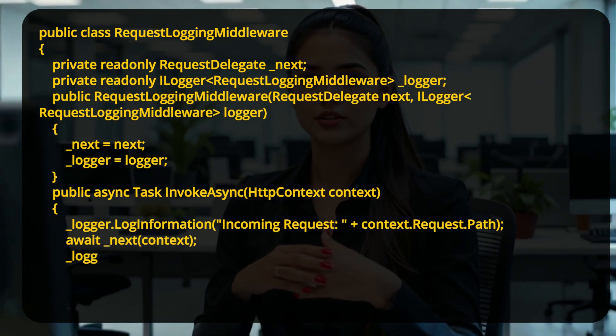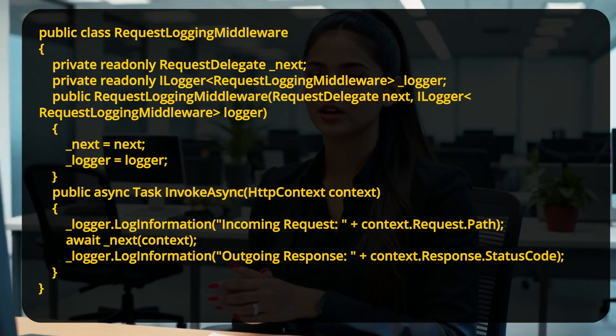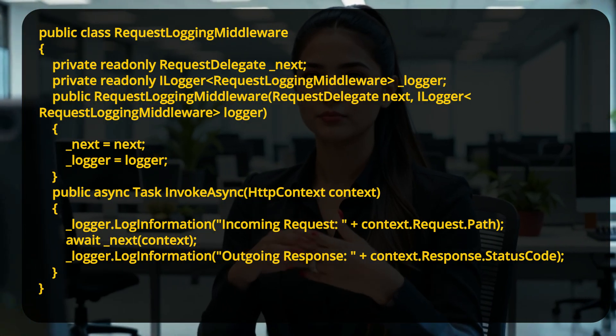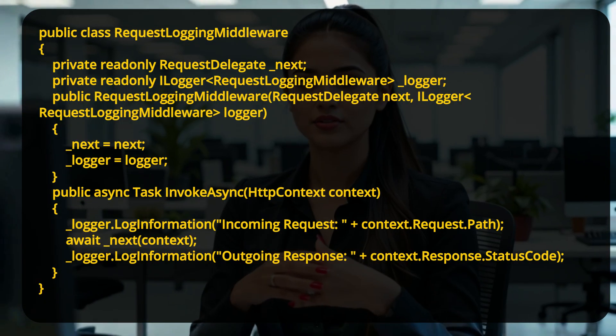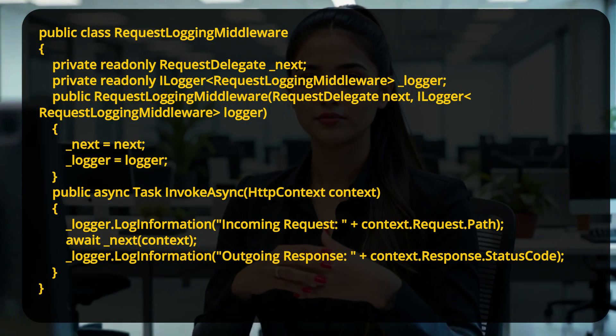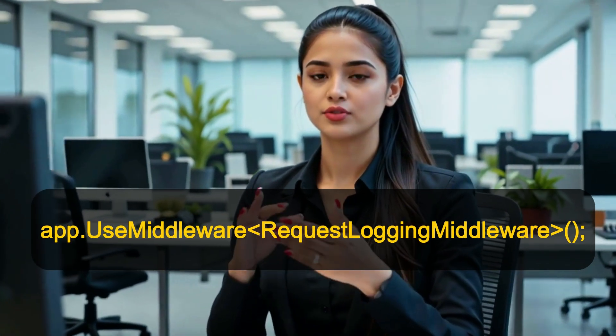Let's challenge you now. How would you write a logging middleware? A custom middleware is usually a class with a constructor and an InvokeAsync method. This class is called RequestLoggingMiddleware. In the constructor, we inject two things: a RequestDelegate, which represents the next step in the request pipeline, and a logger, which helps us log messages. The main logic is inside the InvokeAsync method. First, it logs the incoming request path. Then it calls the next middleware in the pipeline using await next(context). After the response is generated, it logs the status code of the outgoing response. This is useful for basic request logging and helps in monitoring or debugging. Finally, we register this middleware in the pipeline using app.UseMiddleware.